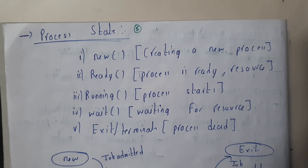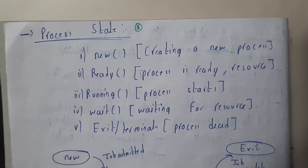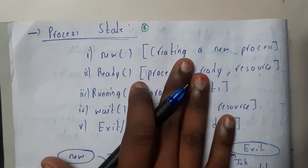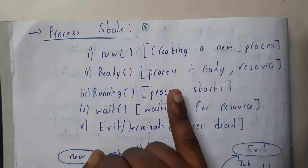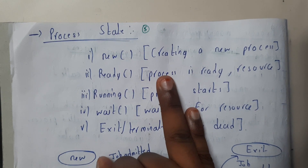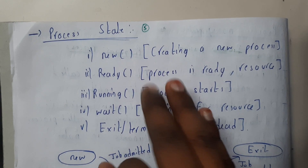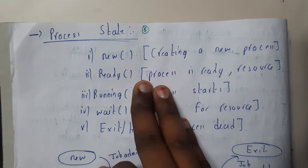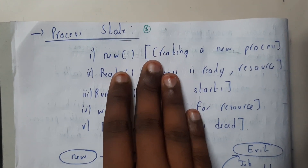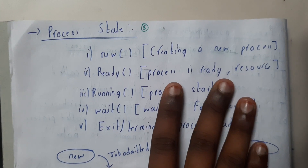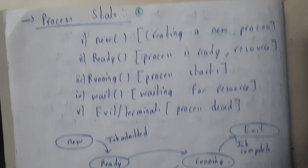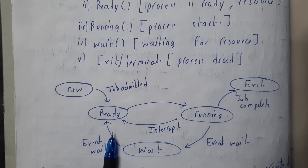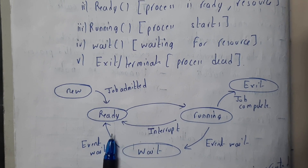Hello guys, we are back with our next tutorial. In this tutorial let us go through process states. Basically, we are having five different process states for any particular process. We can create a process; if it is ready with everything it will be in the ready state, if it is running already it will be in running state, if it is waiting for resources it will be in waiting state, and if its execution is completed it will be exiting or terminating.